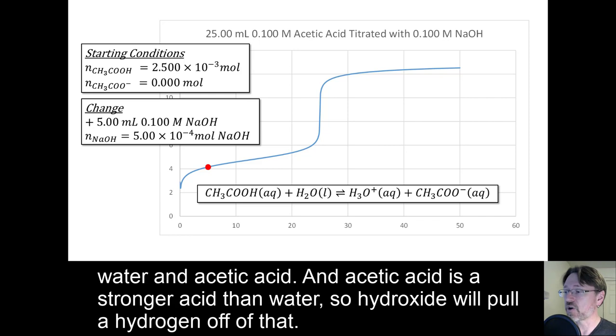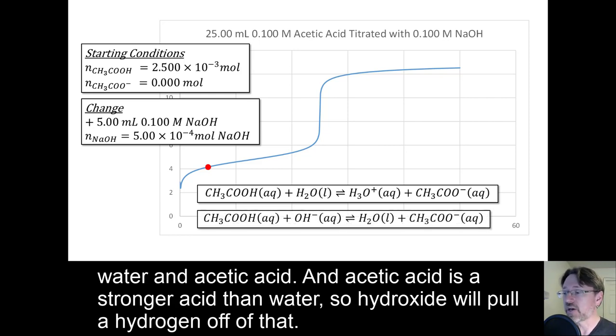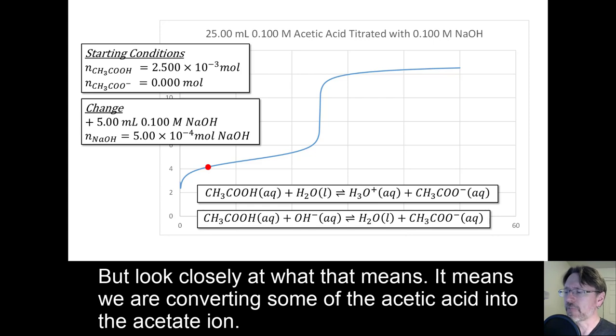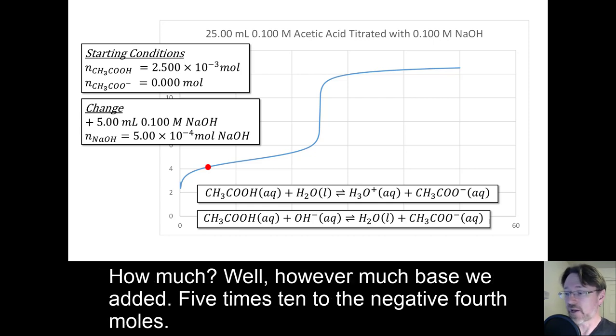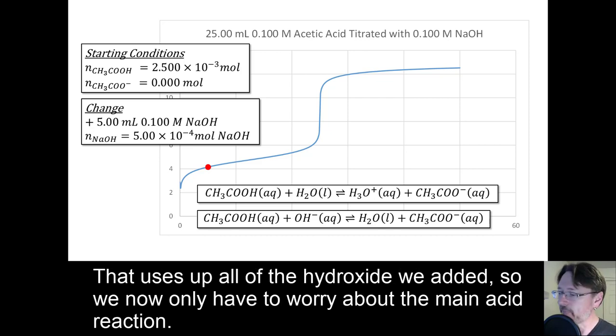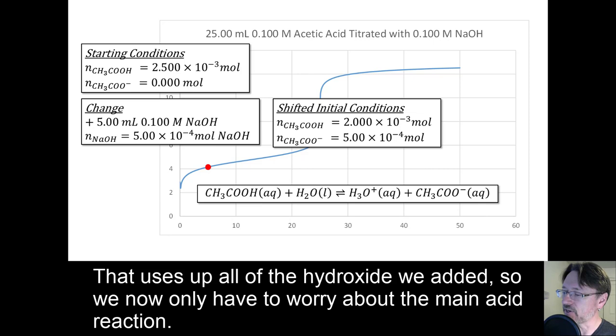And acetic acid is a stronger acid than water. So hydroxide will pull a hydrogen off of that. But look closely at what that means. It means we are converting some of the acetic acid into the acetate ion. How much? Well, however much base we added. 5 times 10 to the negative 4th moles. This uses up all of the hydroxide that we added. So now we only have to worry about the main acid reaction.